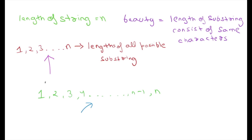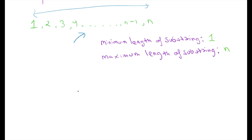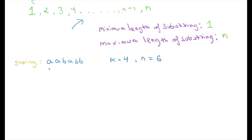We can use binary search to find the appropriate number in these values which will become the maximum beauty of the string. The minimum length of a sub-string is 1 and the maximum length is n, so our answer lies between 1 and n inclusively. Now with the help of this example let's see how we can apply binary search.